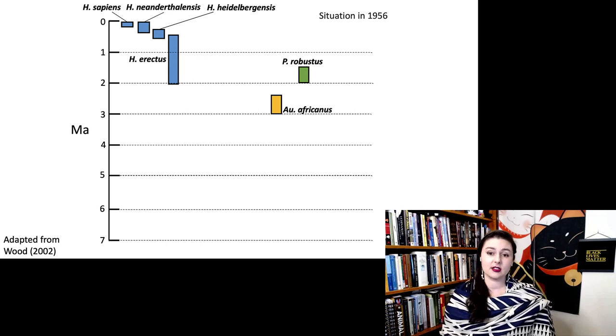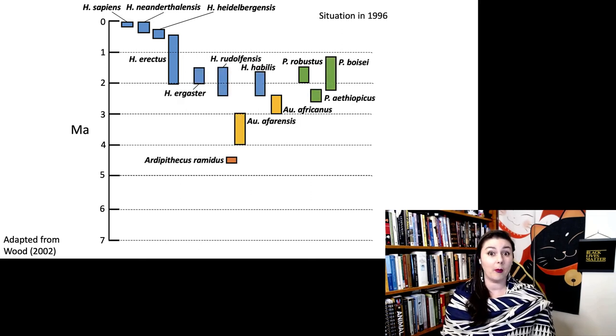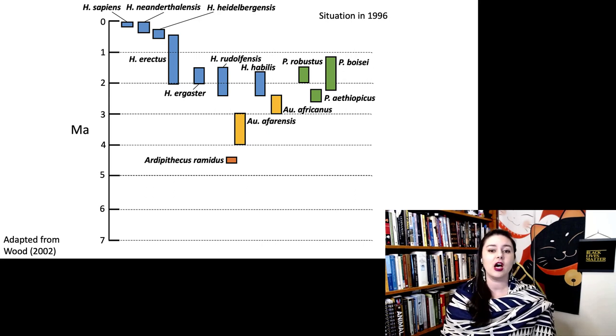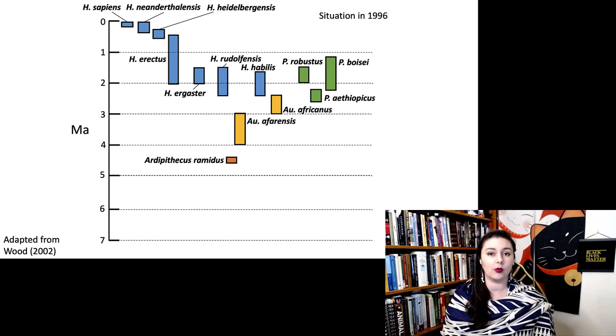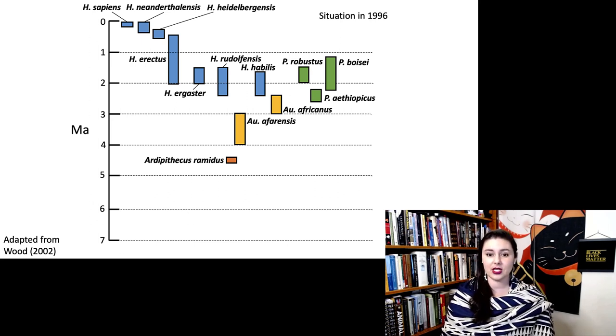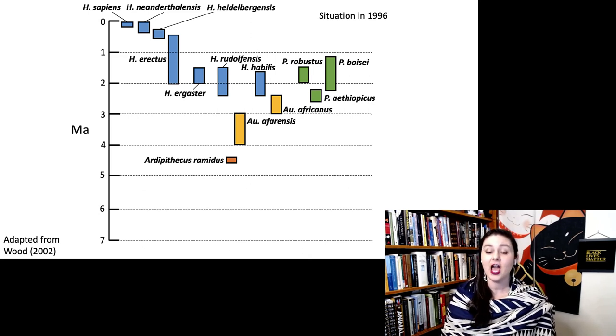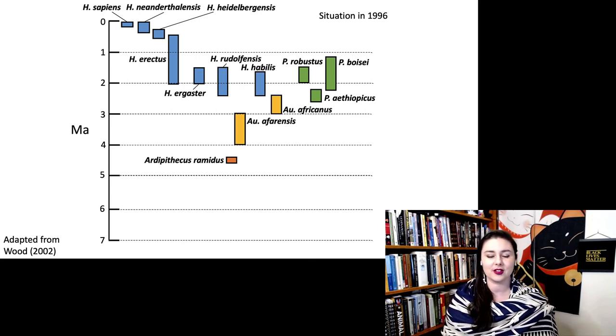In 1996, we had many more species that we had discovered at this time. So you can see there's a few more species in blue that are a little bit younger. We had discovered a few more robust Australopithecus in green. We had also discovered Australopithecus afarensis, that's Lucy. And at this time, we had also discovered a slightly older one, Ardipithecus ramidus.